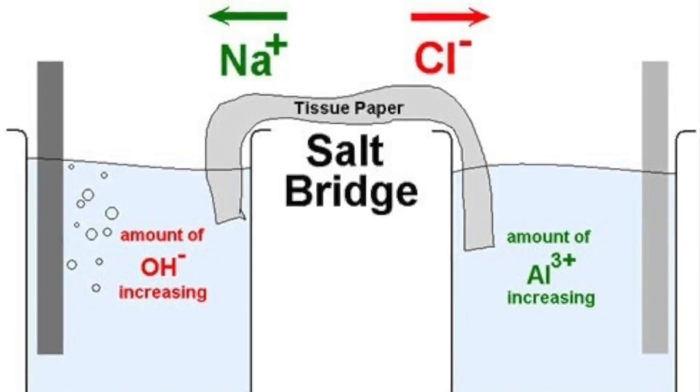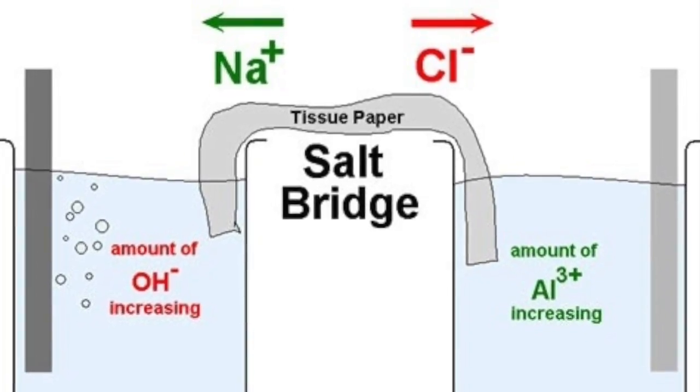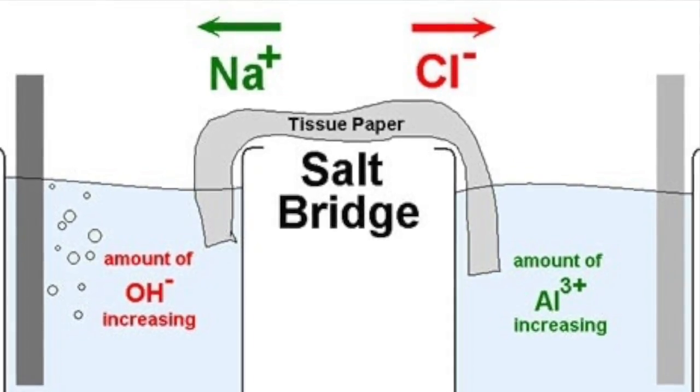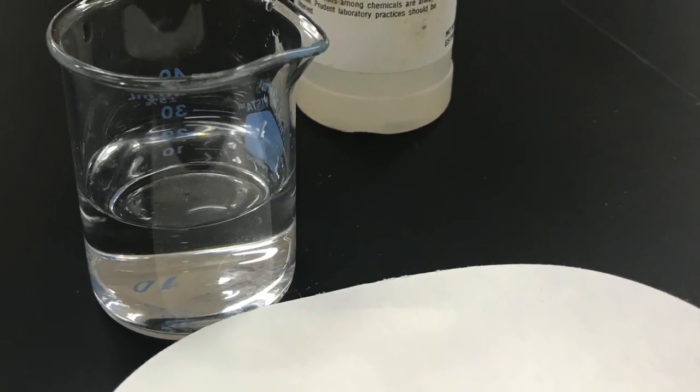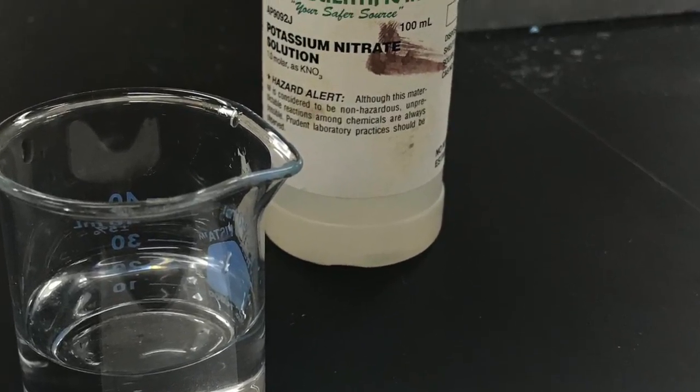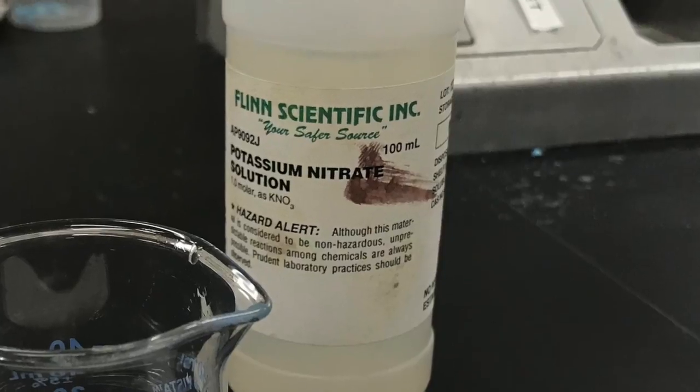The purpose of the salt bridge is to prevent a buildup of charge on either side of the cell. The bridge itself can be made of filter paper or strings soaked in an ion solution, such as potassium nitrate.